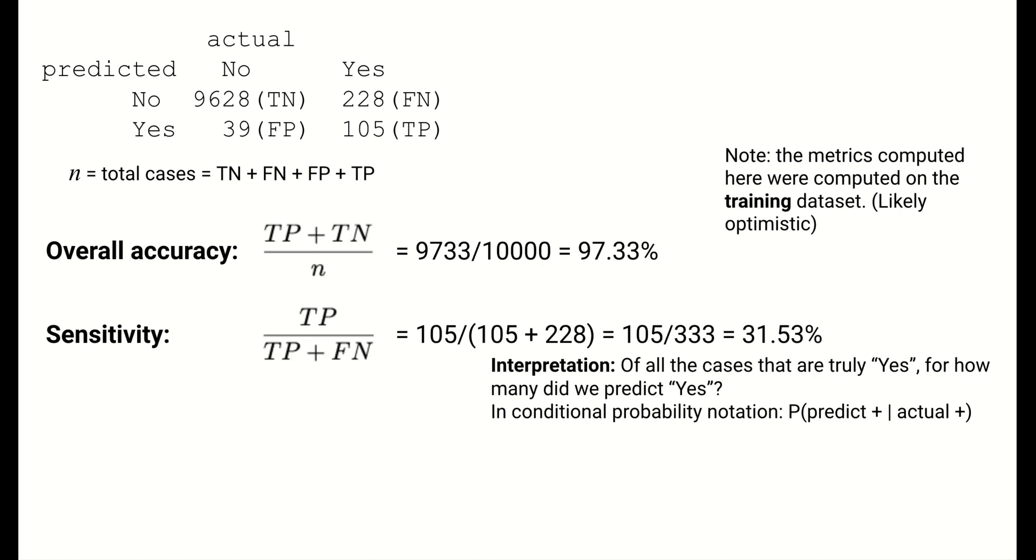Another common metric is sensitivity. Sensitivity is a class-specific accuracy measure that gives the percentage of true yeses that are predicted to be yes. In this case, it's the percentage of actual defaulters whom we predict to default. So there are 333 people who defaulted, but we only detected 105 of them, or 31.53%. Sensitivity can also be expressed in conditional probability notation as the probability of predicting positive given that the case was actually positive. In other words, the probability of predicting a positive among those who are actually positive.